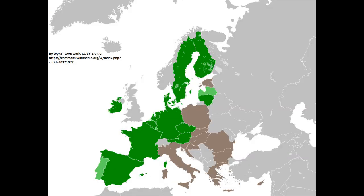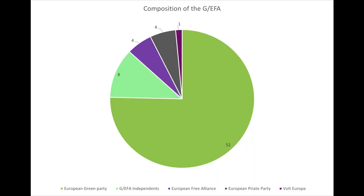It is a pro-EU group. The group contains 69 MEPs from 15 member states, mostly from Western and Northern Europe. The largest national parties present include the Greens of Austria, the Czech Pirate Party, the Green League of Finland, Europe Ecology of France, Party of the Corsican Nation, Alliance 90/The Greens of Germany, the Latvian-Russian Union, Green Left of the Netherlands, the Republican Left of Catalonia, and the Green Party of Sweden. It is headed by Philippe Lamberts of Belgium and Ska Keller of Germany. The composition is mostly Green members, with 52 of its members being Green Party members, 8 independents, 4 European Free Alliance members, 4 European Pirate Party members, and 1 member of Volt Europa.